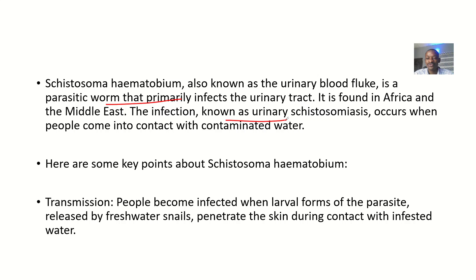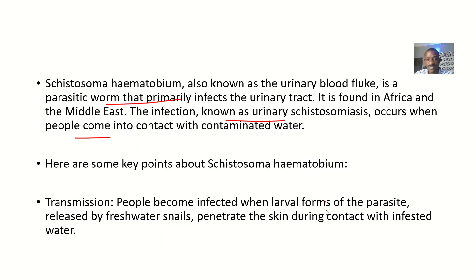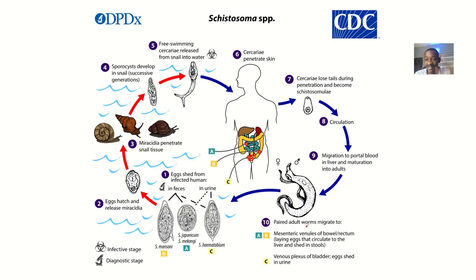The infection is known as urinary schistosomiasis, and it occurs when people come in contact with contaminated water. The life cycle involves going into the water — perhaps you're a tourist or you live in these areas. People get infected when larval forms of the parasite are released by freshwater snails into the water.